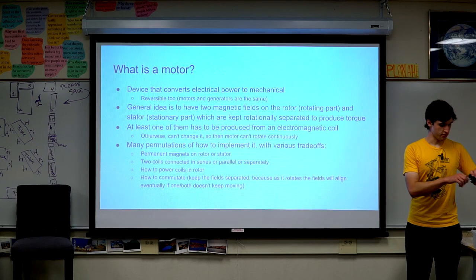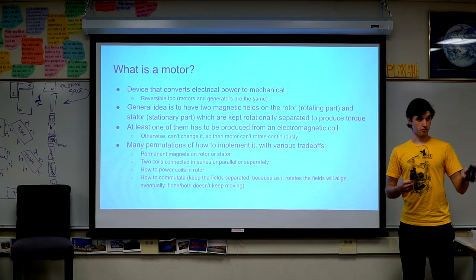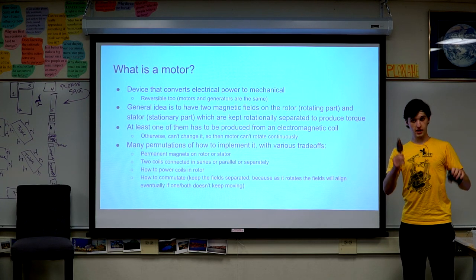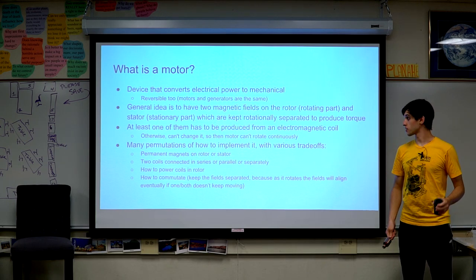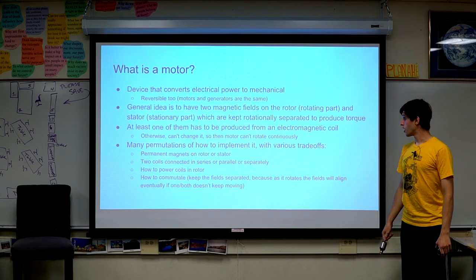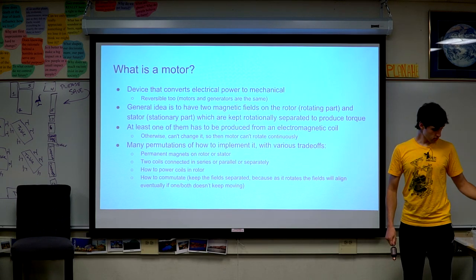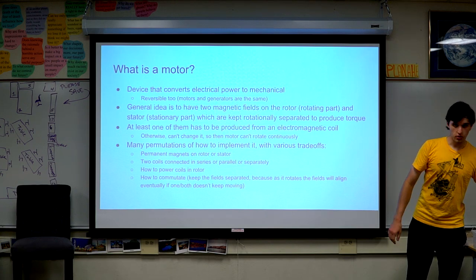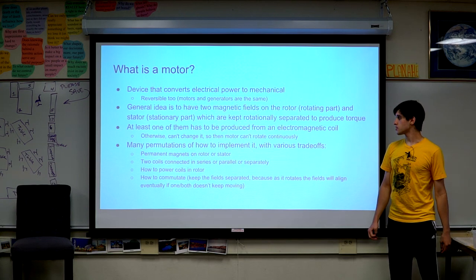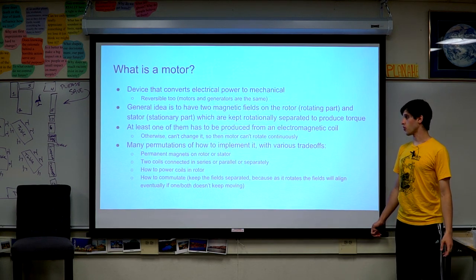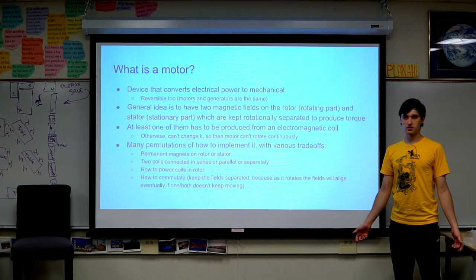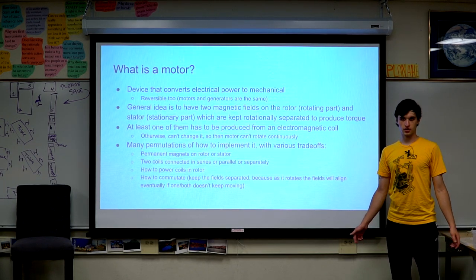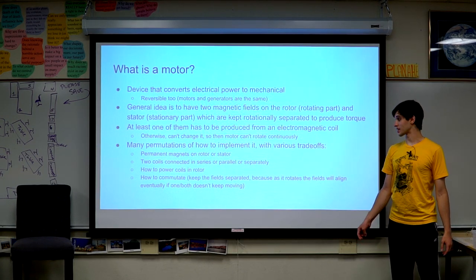You have to keep the rotor and stator rotationally separated so you can continually produce torque as the motor rotates. Here's a SIM I've taken apart — this is the stator and this is the rotor. When making a motor, at least one of your magnetic fields has to be produced from an electromagnetic coil, because if you have two permanent magnets, once they rotate they'll be lined up and it won't keep rotating.